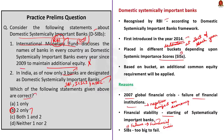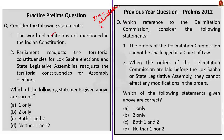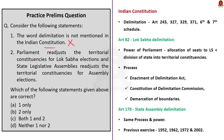The next question is about delimitation. Statement 1: The word delimitation is not mentioned in the Indian Constitution — this is incorrect. The word delimitation is mentioned many times in the Indian Constitution: in Articles 243, 327, 329, 371, the Sixth Schedule, and the Seventh Schedule.